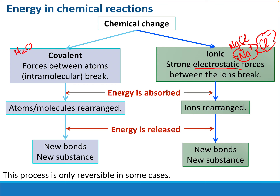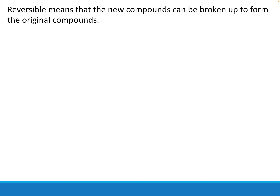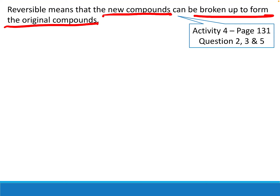This process can be reversible, but not always. Sometimes once we've made something it's very difficult or impossible to unmake it. Reversible means the new compounds can be broken up to form the original substances. Some reactions reverse on their own without any help, others need extra energy put in to reverse, and some will not reverse at all under any circumstances. Now you need to do Activity 4, and that's where we'll end this lesson.